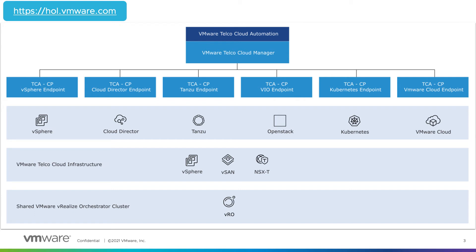VMware Telco Cloud Automation Control Plane provides the infrastructure abstraction for placing workloads across clouds using Telco Cloud Automation. VMware Telco Cloud Automation provides multi-cloud operational management, simplifying the design, onboarding, and management of both network functions and services across data centers and tenants for the Telco Cloud.